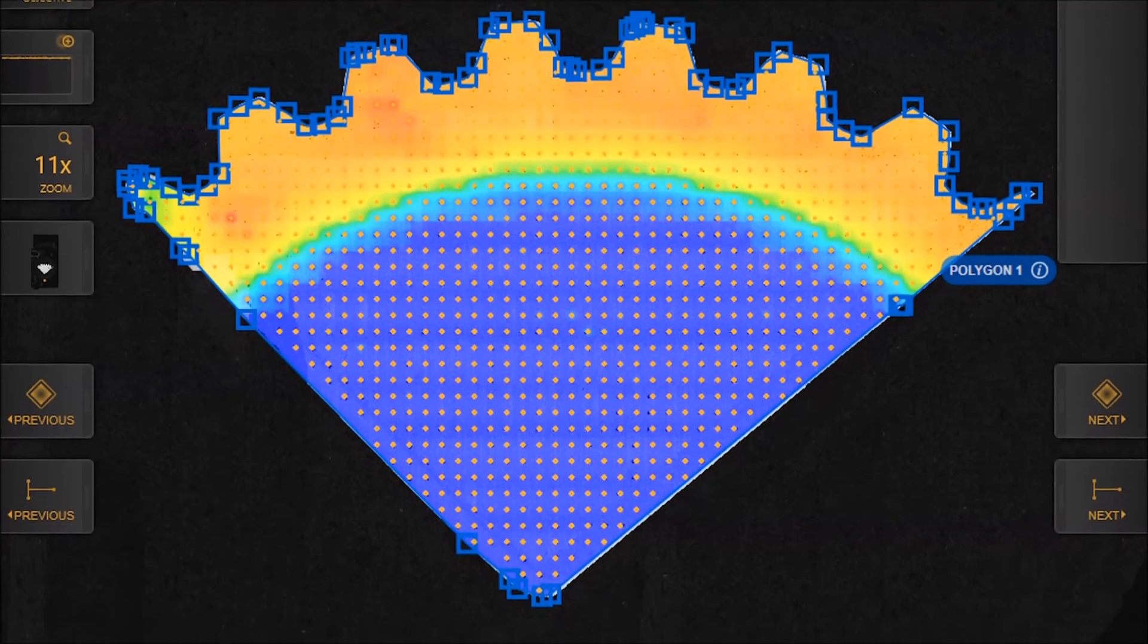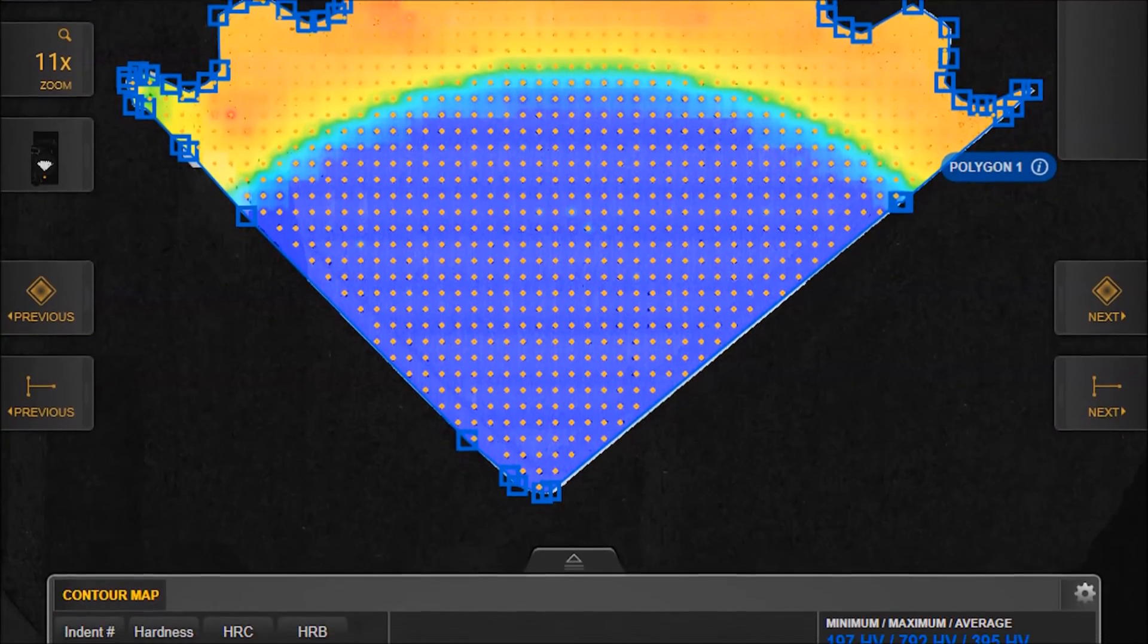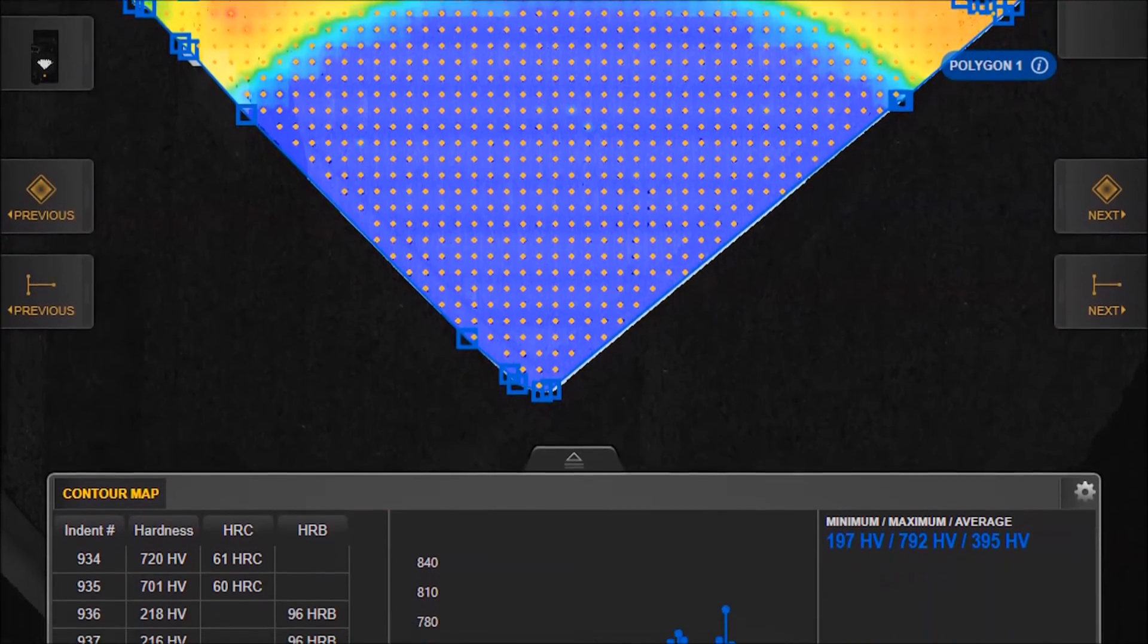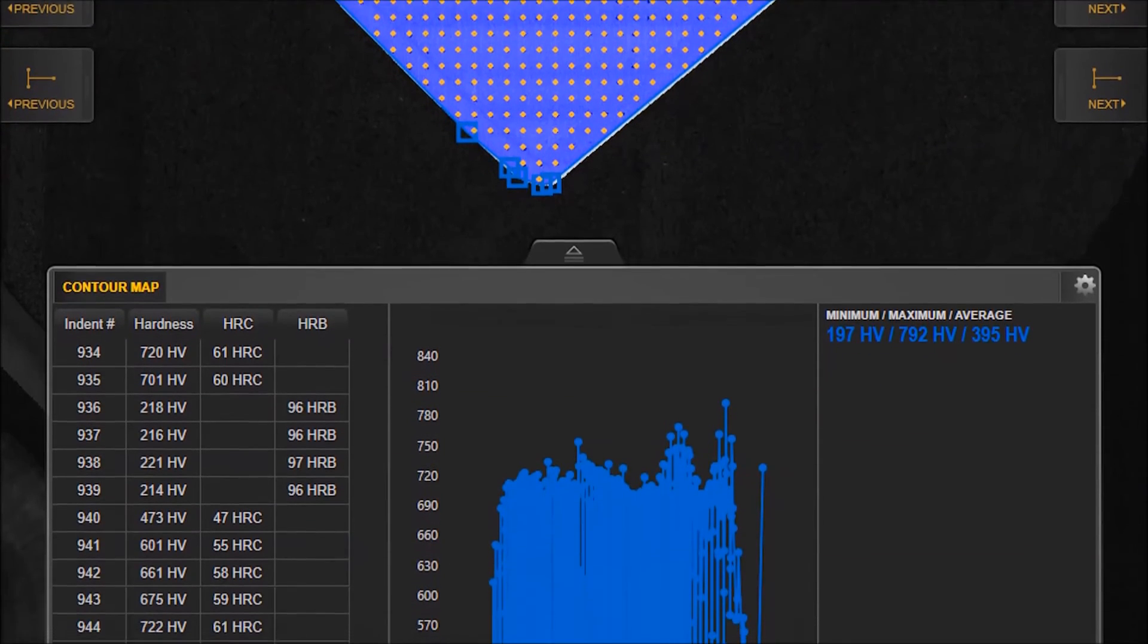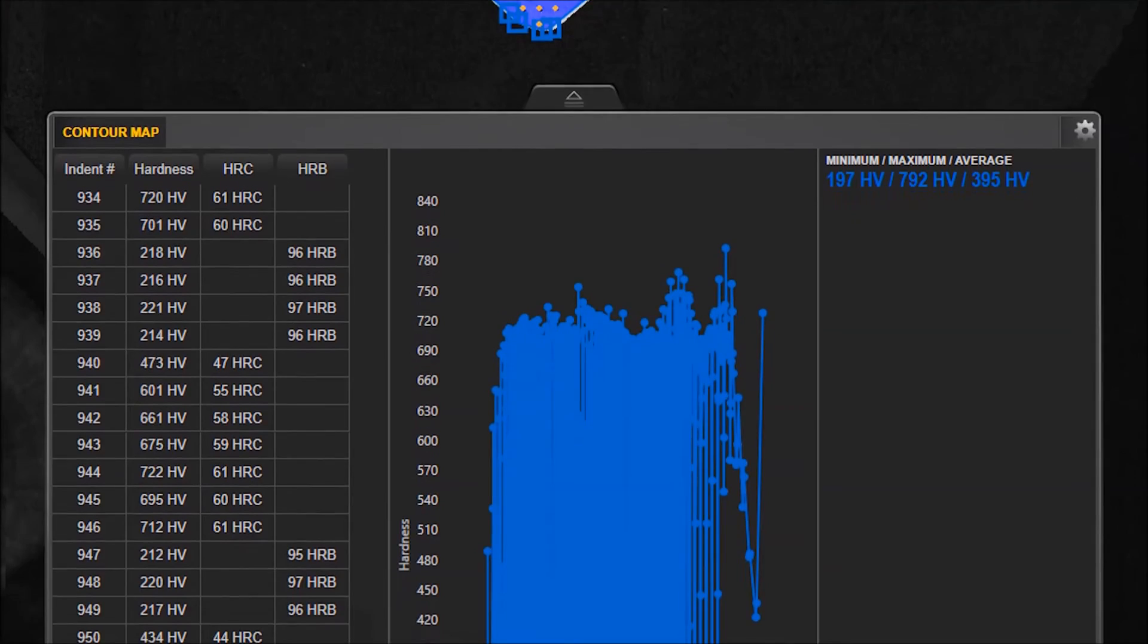The optional advanced analysis module takes your instrument automation a step further with the color hardness map, which displays the sample hardness and location with a color representation of hardness variances.